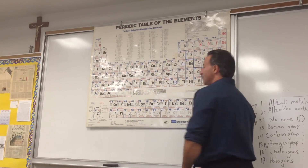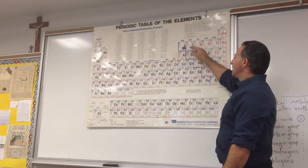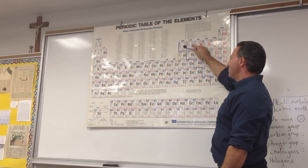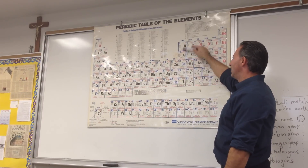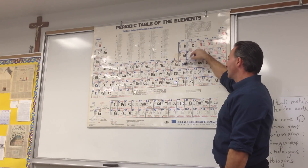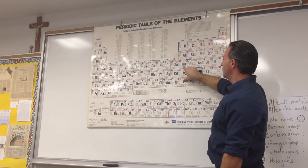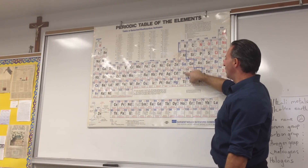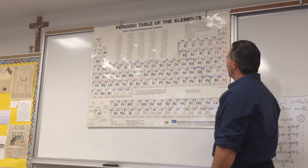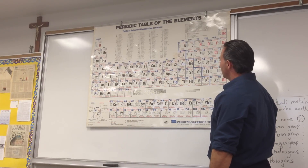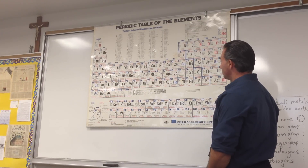Group 13 is called the boron group, and you memorize it by saying: B-Al-Ga-In-Tl. So you make a word out of it: Val and then Ga-In-Tl. They typically take on a +3 charge.